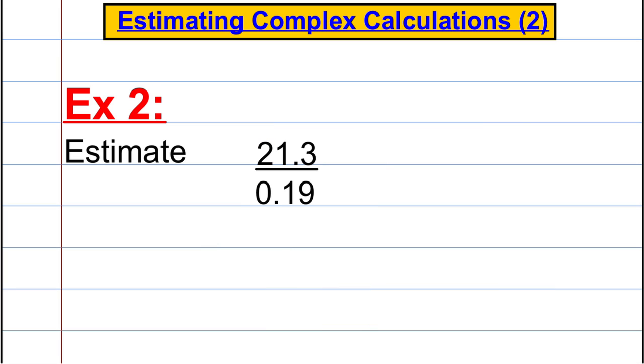Next one. Estimate 21.3 divided by 0.19. We're going to round everything to the first significant figure as before. The 2 in the tens column is the first significant figure there, and the 1 in the tenths column is the significant figure there. This answer is approximately equal to 20 divided by 0.2.